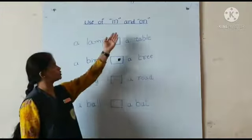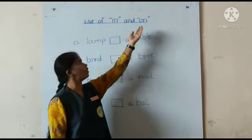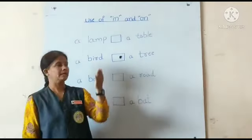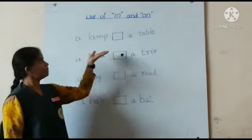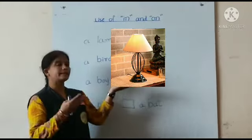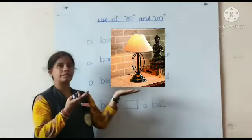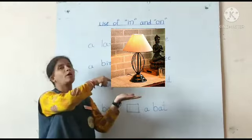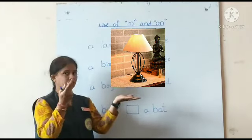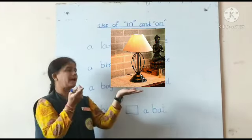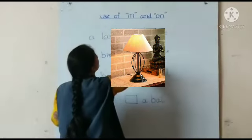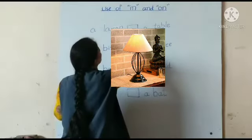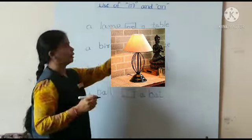Now we are going to study about 'on'. Shall we see some examples? A lamp, a table. Where is the lamp, children? A lamp is on a table. A lamp is on a table.